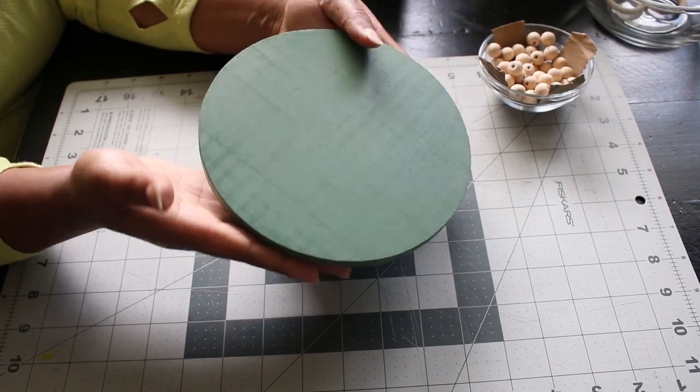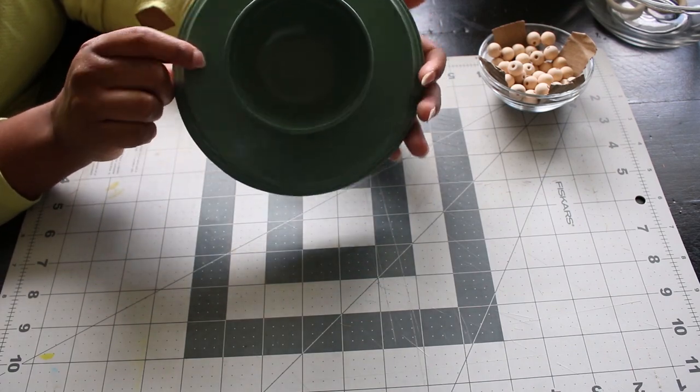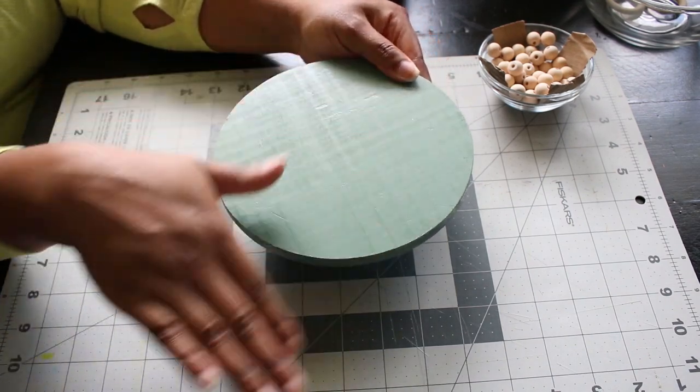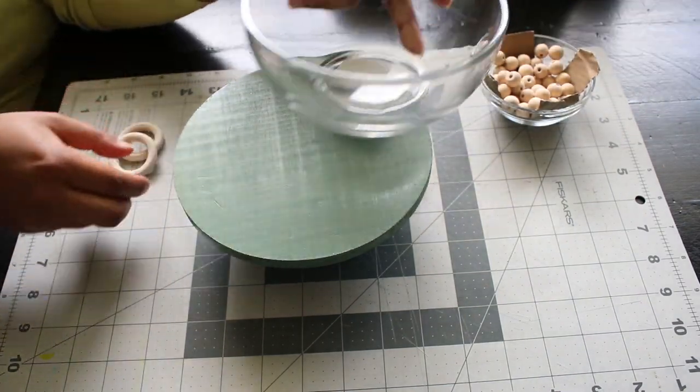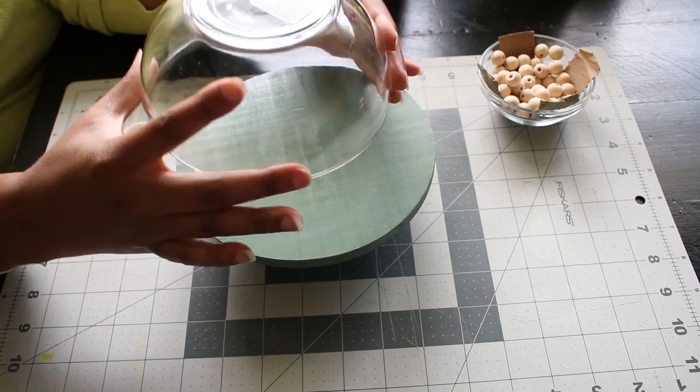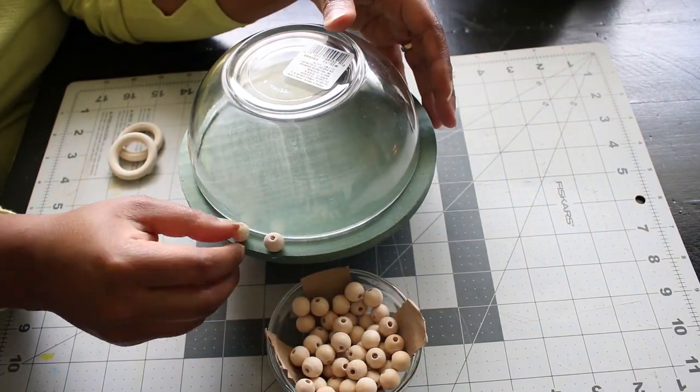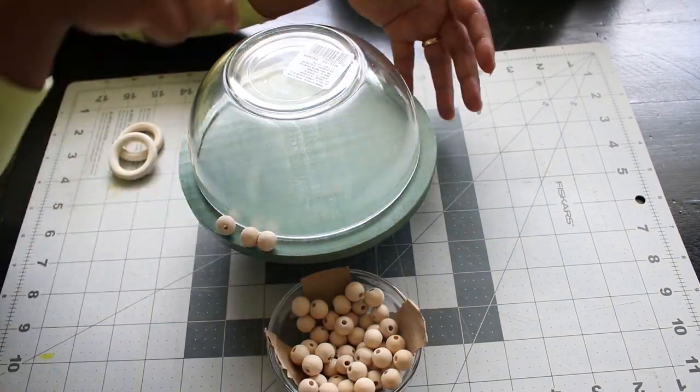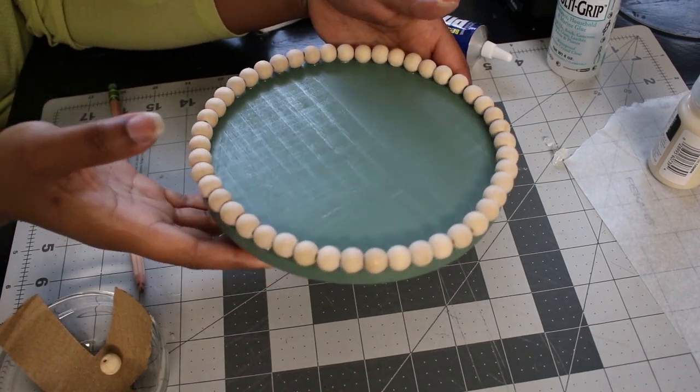Now, this is going to be a mini cloche, and I'm going to use a glass Dollar Tree bowl as the lid. I wanted the bowl to be secure on top. You can see that space around the edge. So I took these small wood beads and glued them around that edge to create a border.